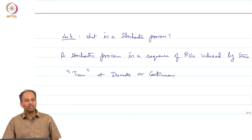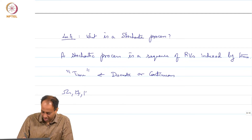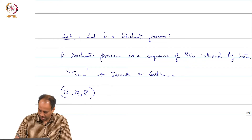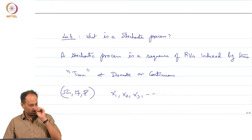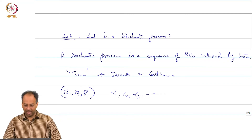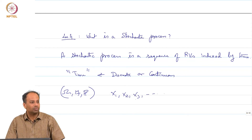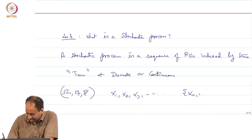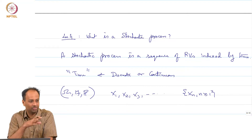If the time index is discrete, it is exactly the sequence we have already seen. You have some probability space (Ω, F, P) already defined. From this probability space a sequence X₁, X₂, X₃, ... realizes every time a little ω is chosen, and the sequence X₁(ω), X₂(ω), X₃(ω) realizes. This index now has the interpretation of time — that is all. For a discrete time stochastic process we write {Xₙ, n ≥ 1} defined on this probability space. It is nothing but a sequence of random variables.